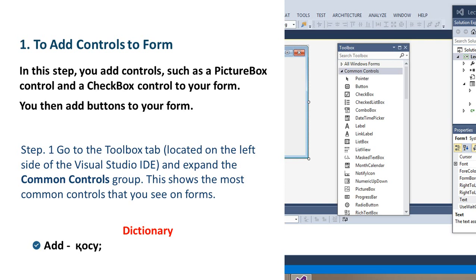In this step you add controls such as a picture box control and checkbox control to your form. You then add buttons to your form. Step 1: Go to the toolbox tab located in the left side of the Visual Studio IDE and expand the common controls group. This shows the most common controls that you see on forms.